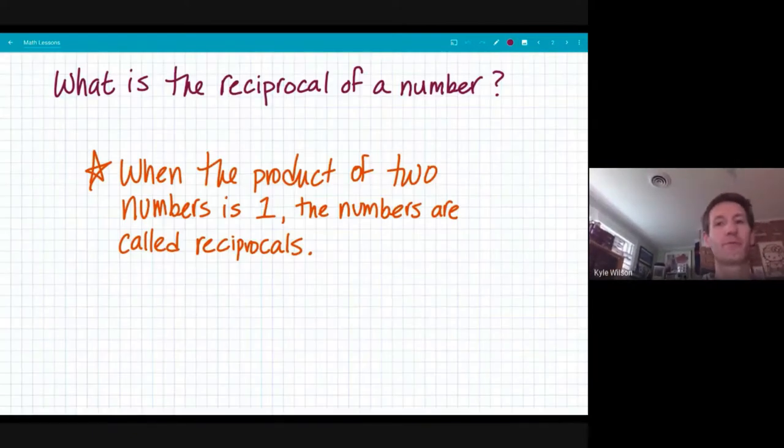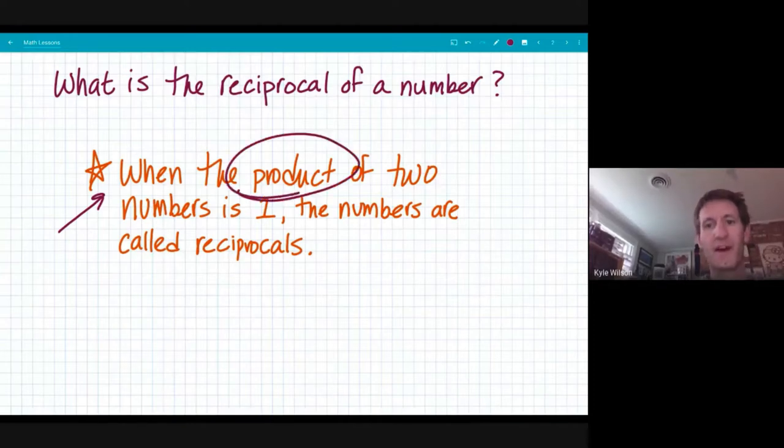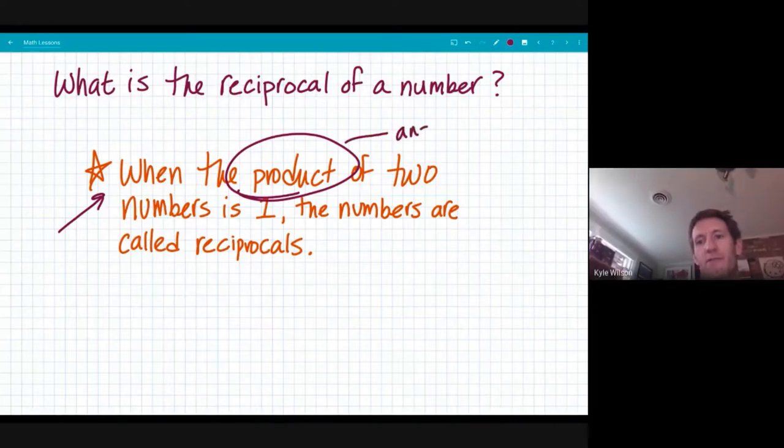So what is the reciprocal of a number? The reciprocal of a number is basically a number that you get when the product of two numbers is one. These numbers are called reciprocals. Remember that product means that is the answer to a multiplication problem.